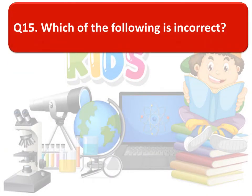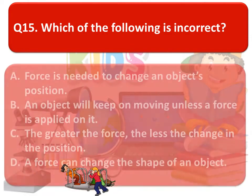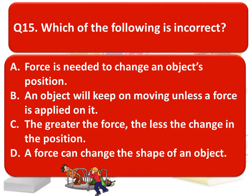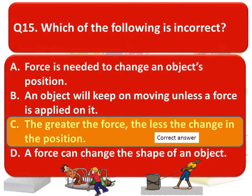The next question is: which of the following is incorrect? Option A: force is needed to change an object's position. Option B: an object will keep on moving unless a force is applied on it. Option C: the greater the force, the less the change in the position. Option D: a force can change the shape of an object. The correct answer is Option C — the greater the force, the less the change in the position.